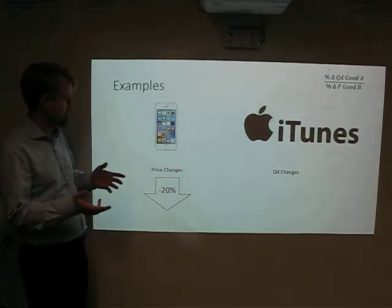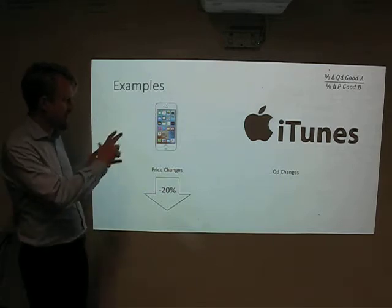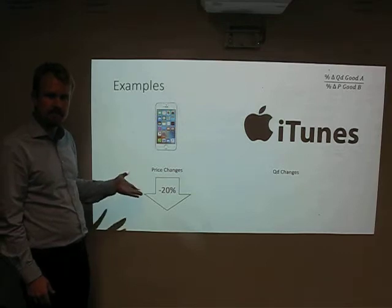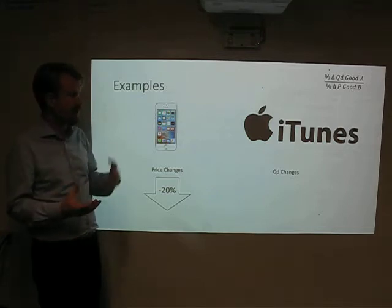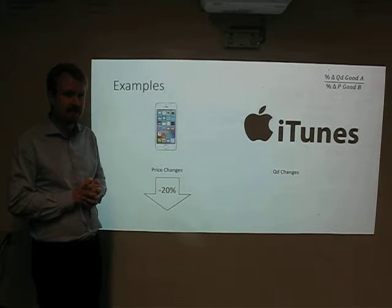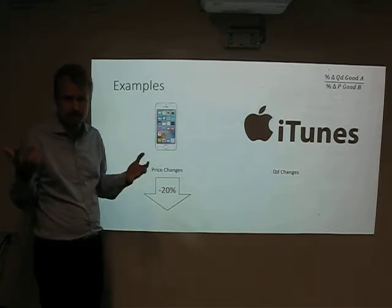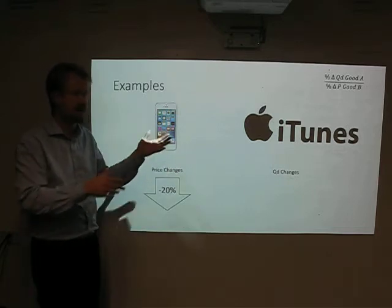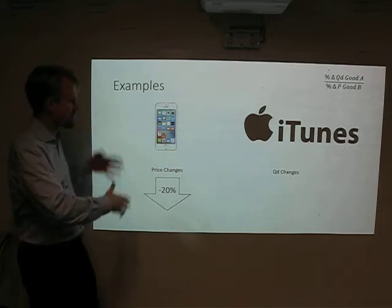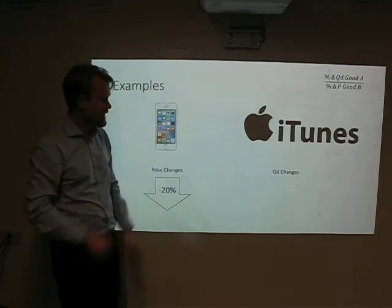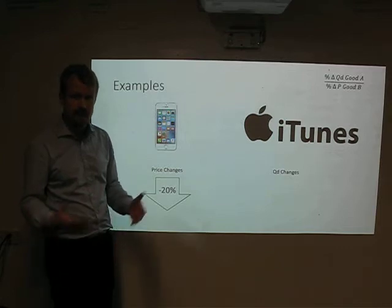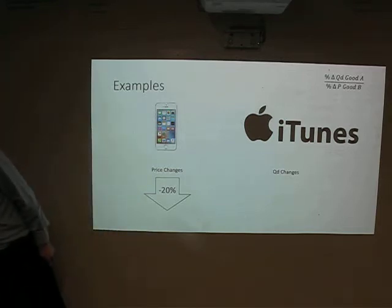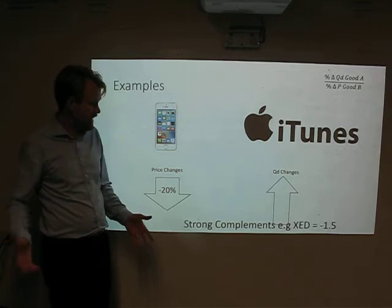Our last example: iPhones and iTunes downloads. If the price of iPhones goes down by 20%, more people are going to buy iPhones. Of the people who buy iPhones, most are going to start using Apple's music service — iTunes or Apple Music. More people will use it because pretty much everybody who has an iPhone is going to get the music service. So there's going to be a big change in quantity demanded for iTunes downloads — a more than proportional increase — meaning these are elastic products and strong complements.